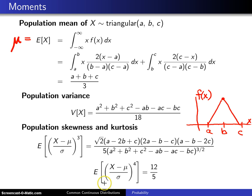Finally, the kurtosis for all triangular random variables turns out to be 12 fifths.